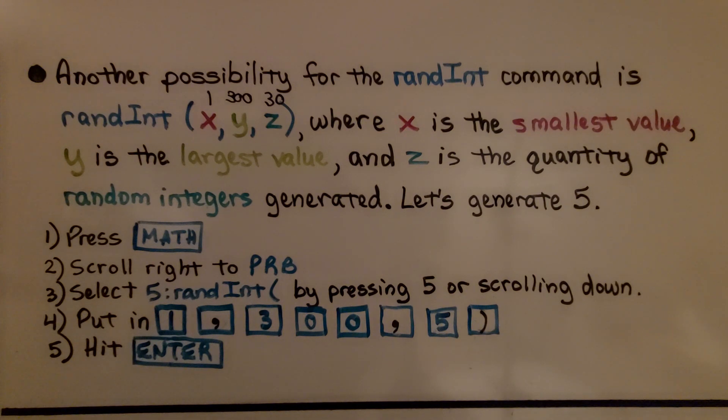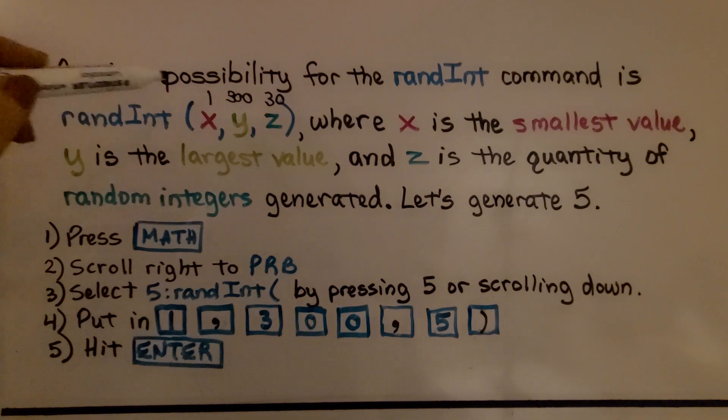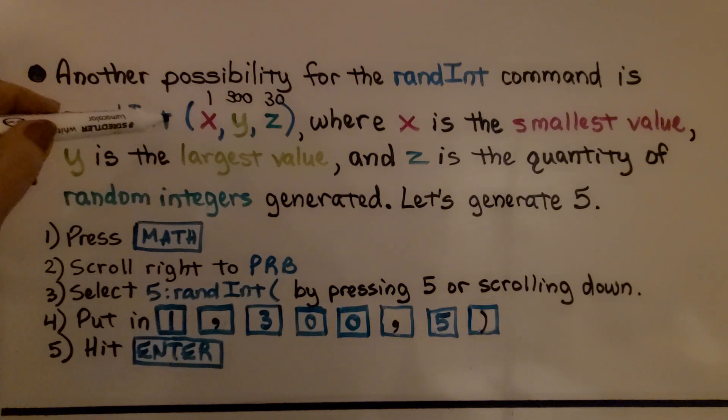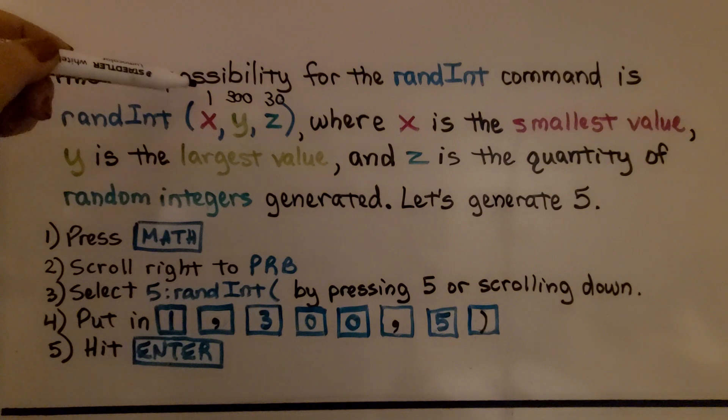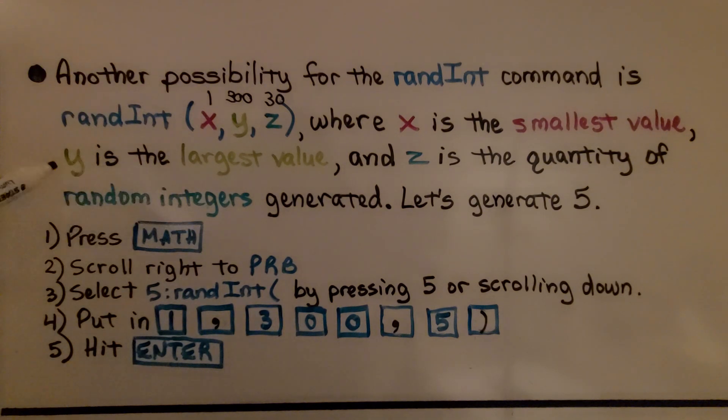Another possibility for the ran int command is ran int, you're going to see the open parentheses, and we're going to have values of x, y, z, where x is the smallest value. So that would be 1, y is the largest value, so in this case it would be 300, and z is the quantity of random integers generated.